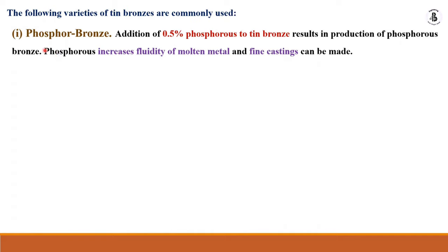The first type of tin bronze commonly used is phosphor bronze. The addition of phosphorus during production improves the fluidity of the molten metal so that fine castings can be made.